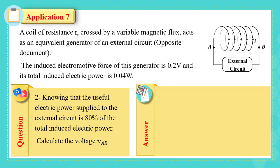2. Knowing that the useful electric power supplied to the external circuit is 80% of the total induced electric power, calculate the voltage UAB. P useful equals 80% of the electric power, which is equal to 0.8 times 0.04, equals 0.032 watt.